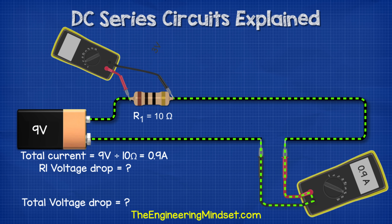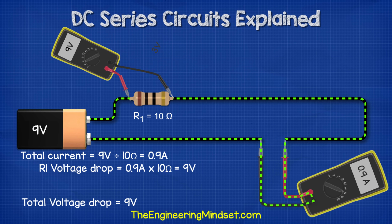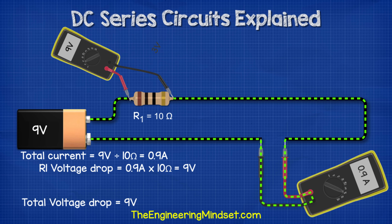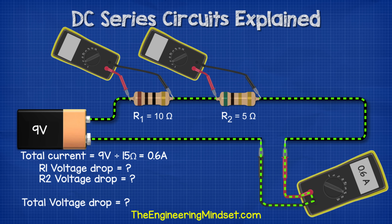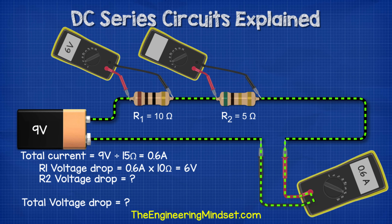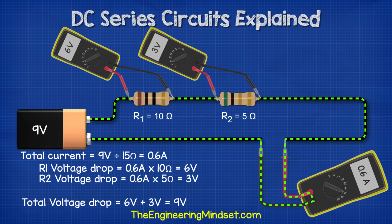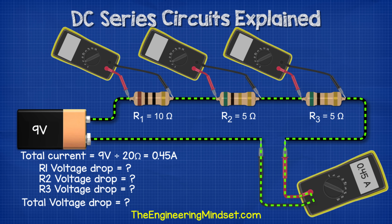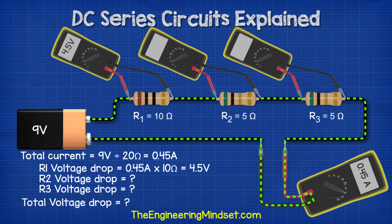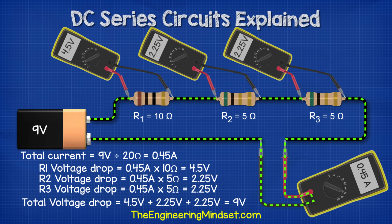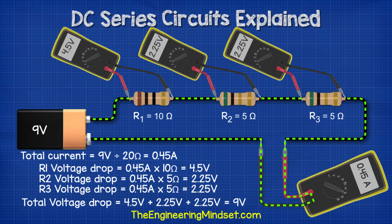In the first circuit with a 10 ohm resistor, the current was 0.9 amps: 0.9 amps × 10 ohms = 9 volts drop, the same as the voltage source. In the second circuit with 10 ohm and 5 ohm resistors, the current was 0.6 amps: R1 gives 0.6 × 10 = 6 volts, and R2 gives 0.6 × 5 = 3 volts — total 9 volts. In the third circuit with 10 ohm and two 5 ohm resistors, the current was 0.45 amps: R1 gives 0.45 × 10 = 4.5 volts, and R2 and R3 each give 0.45 × 5 = 2.25 volts — total 4.5 + 2.25 + 2.25 = 9 volts.